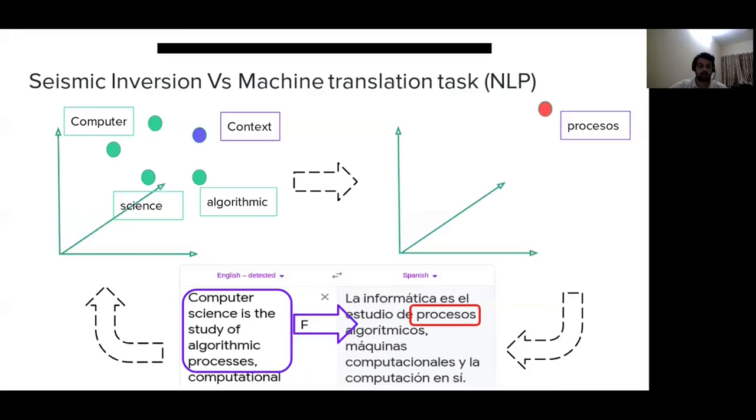Again, we go back to the machine translation task. In state-of-the-art machine translation, they first find the embedding of each of the words in this context in a high-dimensional space, and then combine them in order to find the embedding of the context. Once you have the embedding for the context, you can then use that embedding to find the predicted word.